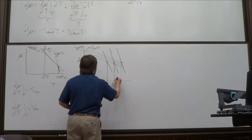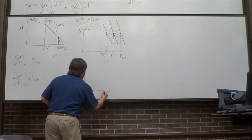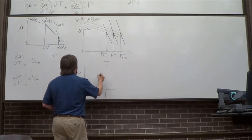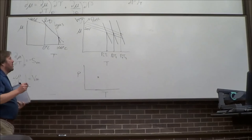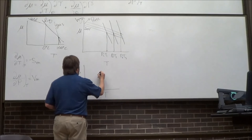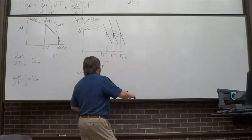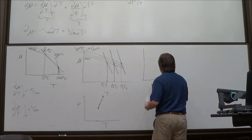Plotting those P versus T pairs from the crossings, starting from the triple point, I can build the coexistence lines. For the solid-liquid transition, higher pressure corresponds to higher temperature — so that line slopes upward to the right. That's the normal behavior for most materials.